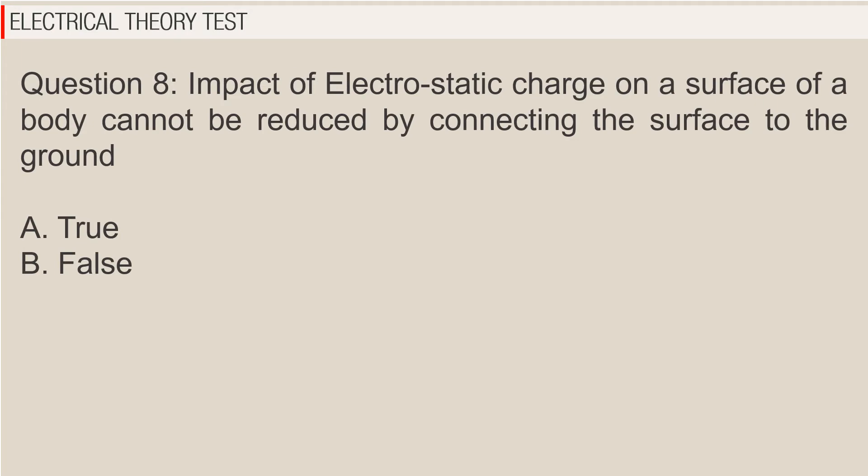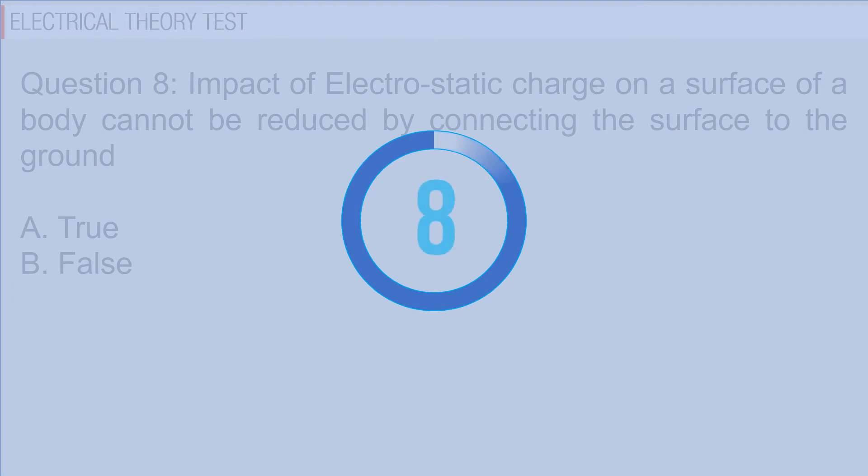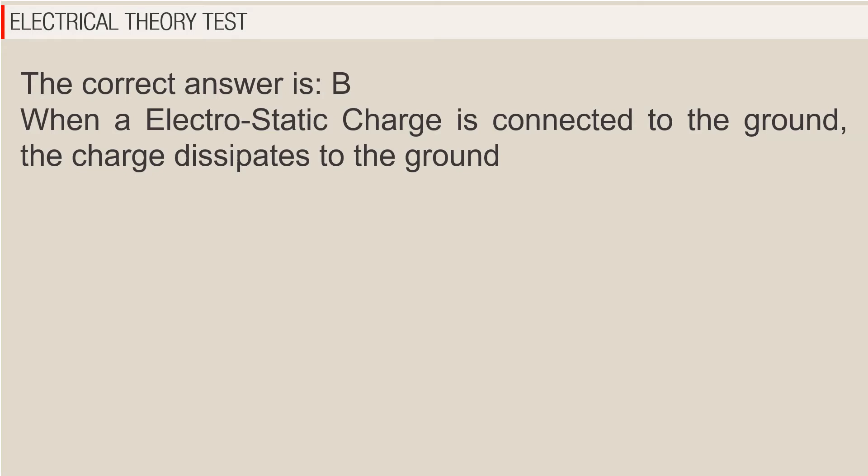Question 8: Impact of electrostatic charge on a surface of a body cannot be reduced by connecting the surface to the ground. A. True, B. False. The correct answer is B false. When an electrostatic charge is connected to the ground, the charge dissipates to the ground.